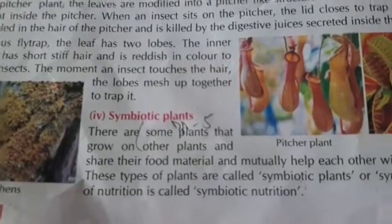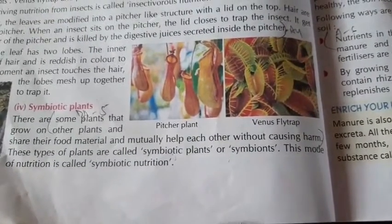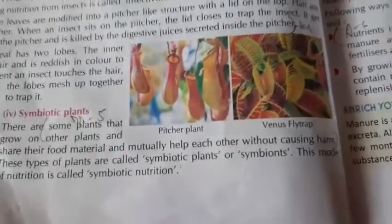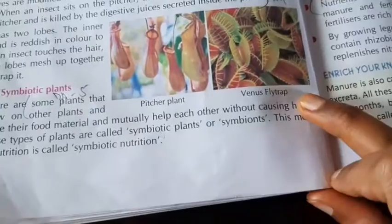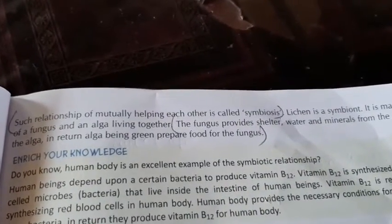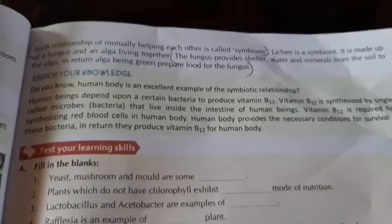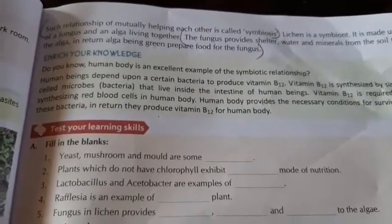Question 5: How do fungus and algae benefit each other? Under symbiotic plants: some plants grow on other plants and mutually help each other without causing harm — this relationship is called symbiosis. The fungus provides shelter, water, and minerals from the soil to the alga; in return, the alga, being green, prepares food for the fungus.